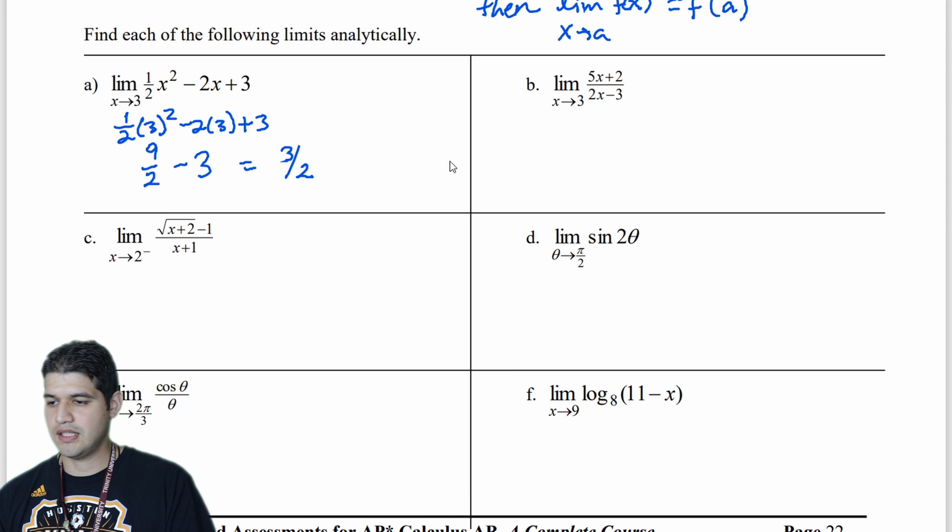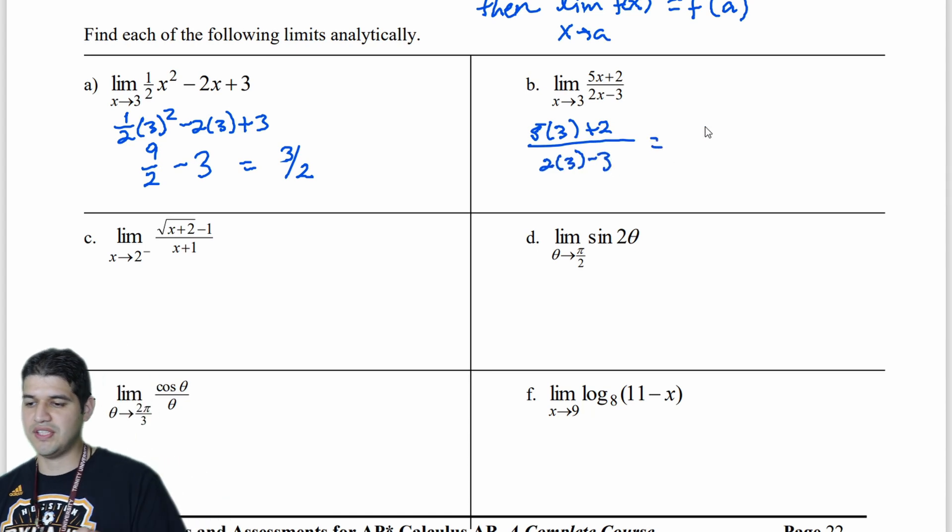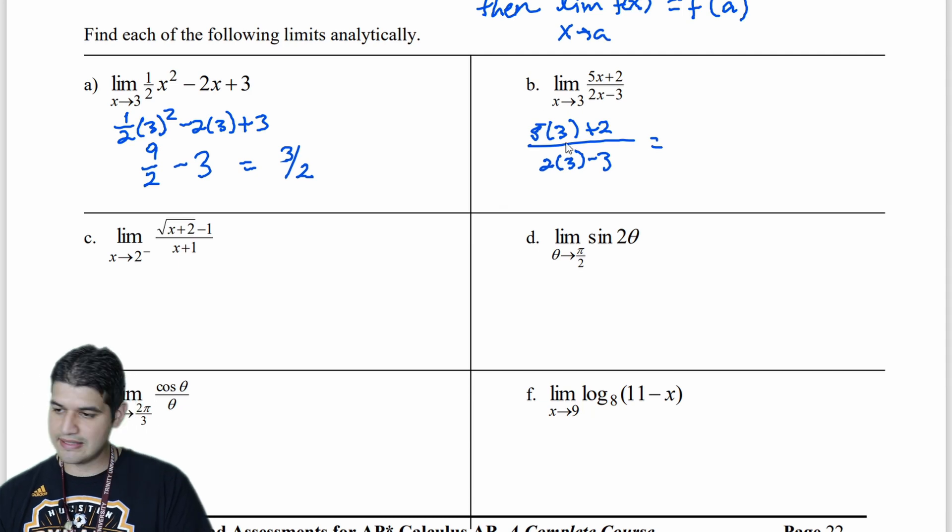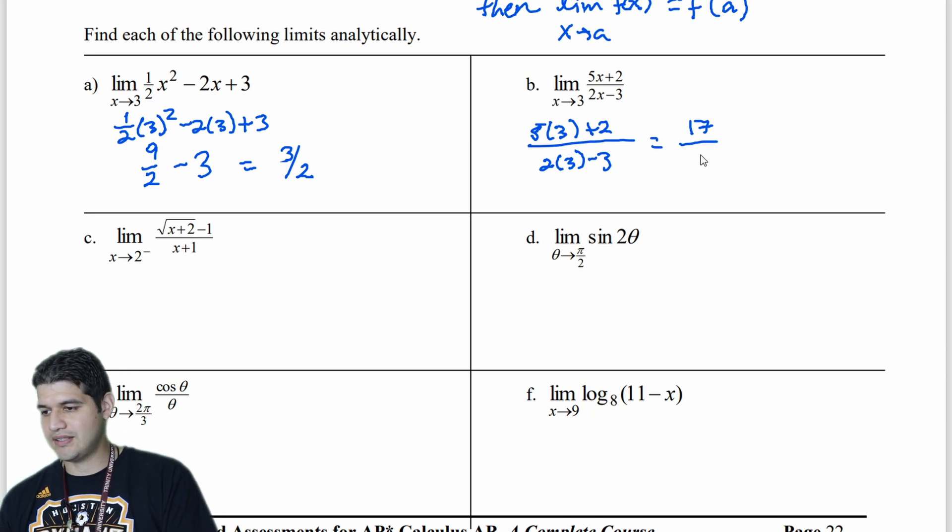Now we're going to do it again. Substitute the value for 3. So 5 times 3 plus 2. Over 2 times 3 minus 3. And let's evaluate that. So 5 times 3 is 15 plus 2. I'm going to get 17. And then 2 times 3 is 6 minus 3 is 3. So I have 17 thirds for b.